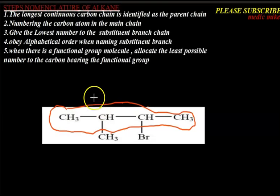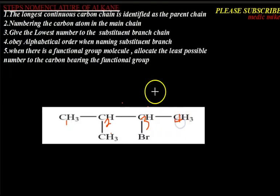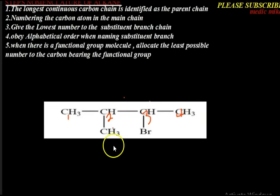Next, we number the carbon atoms in the main chain: carbon one, carbon two, carbon three, carbon four. Our rule says we give the lowest number to the substituent branch. Here we have a branch — an ethyl group — attached to carbon two.